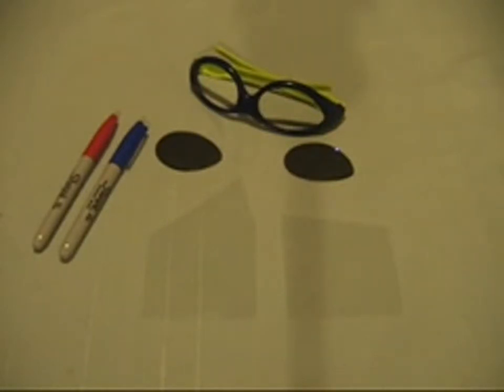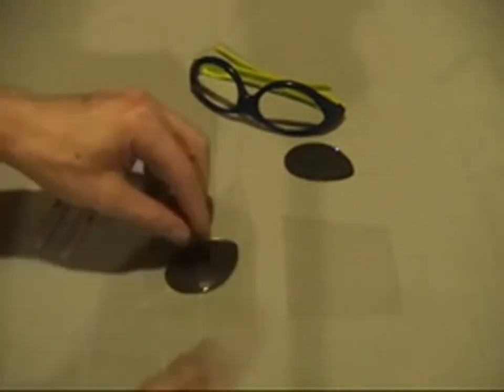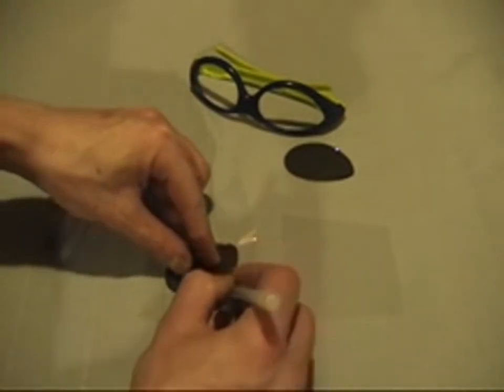All you need are a cheap pair of plastic sunglasses, like these that came free with a kid's meal, a red and blue permanent magic marker, and any flat piece of clear plastic, like this transparency sheet.